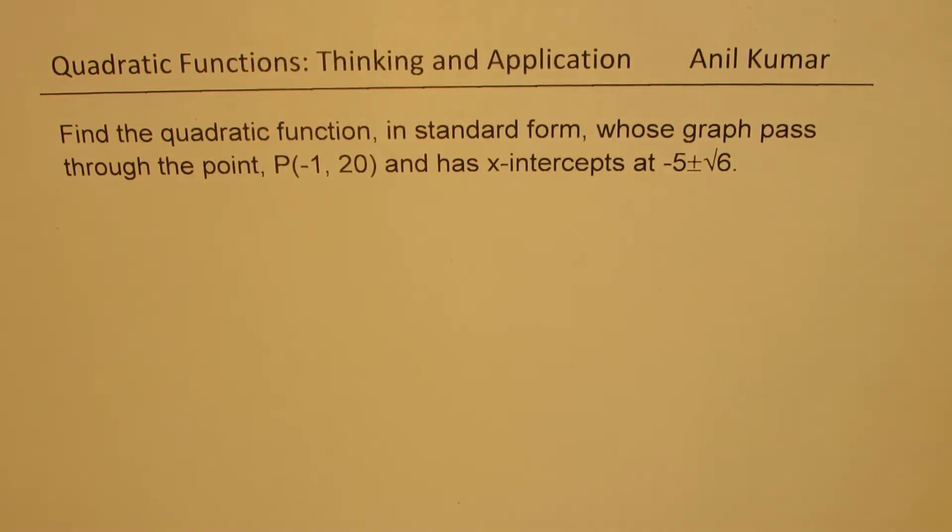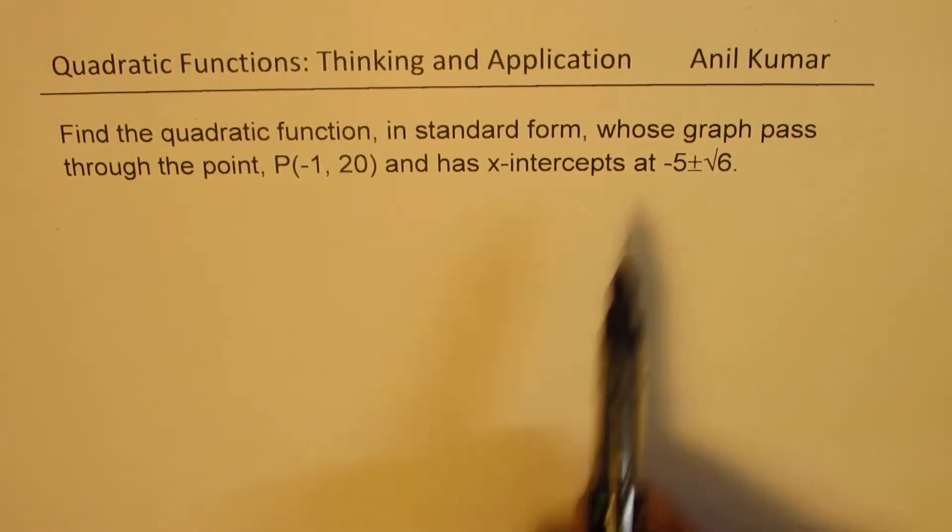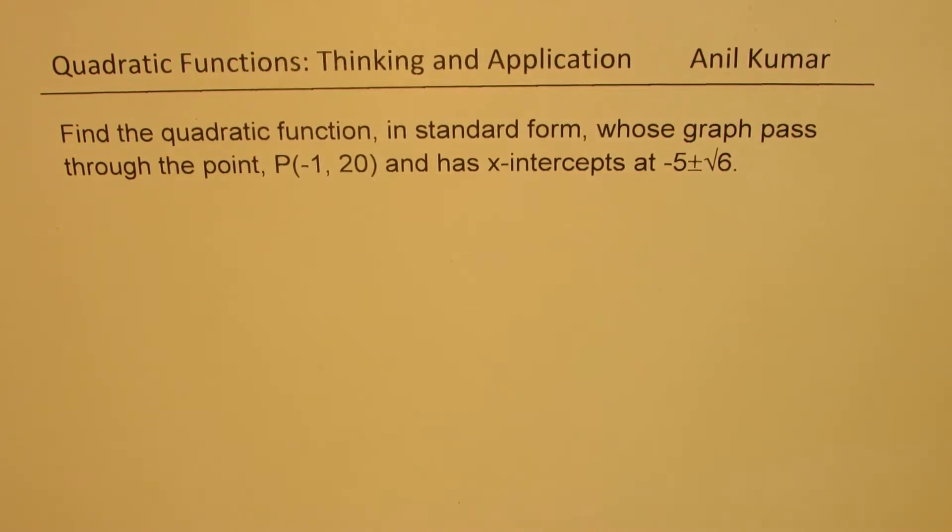The question here is: find the quadratic function in standard form whose graph passed through the point P(-1, 20) and has x-intercepts at -5 ± √6. Now, since the radical root is given to us, this becomes slightly difficult. Let us see how to solve such questions.